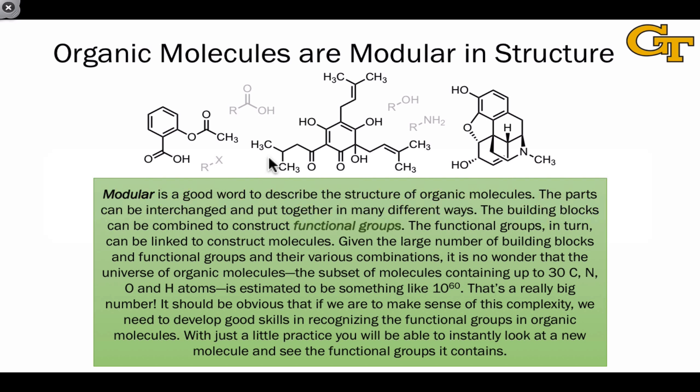Thinking about functional groups is important because we can think of organic structures as modular with the functional groups being interchangeable pieces that appear in different molecules and behave analogously. We see many of the same types of structures recur in different molecules. For example, the hydroxyl groups here, the carbon-carbon double bonds all over the place in these molecules, the carbon-oxygen double bonds here and here.